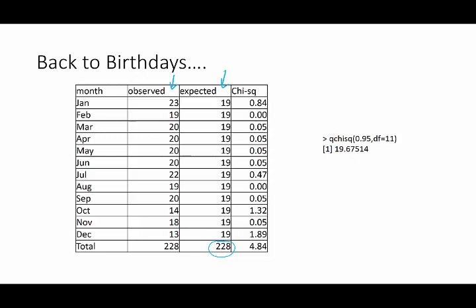And then for each of these categories what we can do is compute the chi-squared, so this is just, you know, 23 minus 19 squared over 19 for example and so on down the list. And you can see that sure enough the biggest contributions, the biggest discrepancies between observed and expected, were from October and December. And overall we ended with the chi-squared statistic of 4.84.